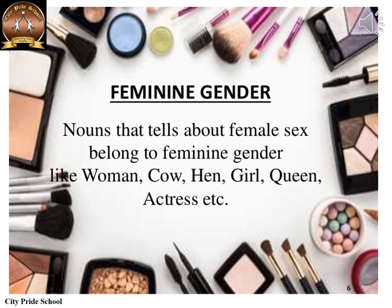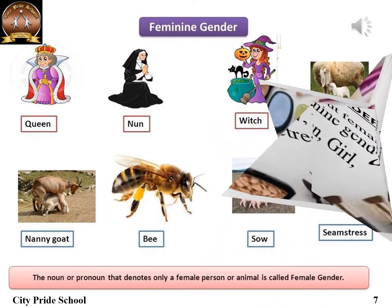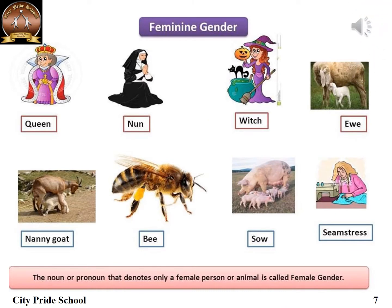Feminine gender: when nouns denote names of females, they are said to be in the feminine gender. Examples: woman, cow, hen, girl, queen, actress. Few more examples of feminine gender: queen, nun, witch, ewe, nanny goat, bee, sow, seamstress.